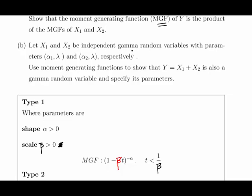And the second part is, let X1 and X2 be independent gamma random variables with parameters alpha 1, lambda and alpha 2, lambda. Use moment generating functions to show that Y equals X1 plus X2, so Y is also a gamma random variable and specify its parameters.